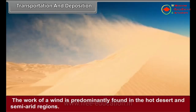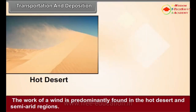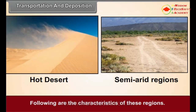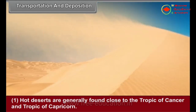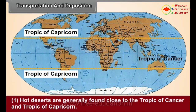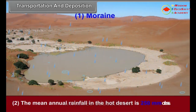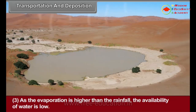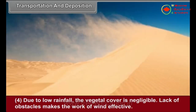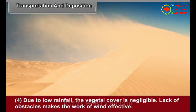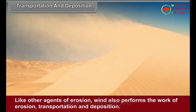The Wind: The work of wind is predominantly found in hot desert and semi-arid regions. Hot deserts are generally found close to the Tropic of Cancer and Tropic of Capricorn. The mean annual rainfall in hot deserts is 250 mm or less. As evaporation is higher than rainfall, the availability of water is low. Due to low rainfall, the vegetal cover is negligible. Lack of obstacles makes the work of wind effective. Like other agents of erosion, wind also performs the work of erosion, transportation and deposition.